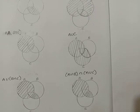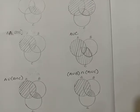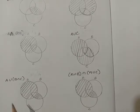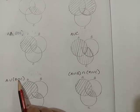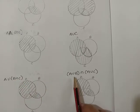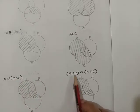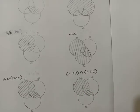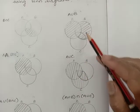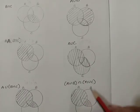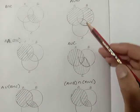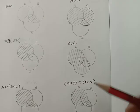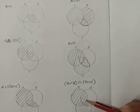Now look at your left hand side and right hand side — both diagrams are equal. Therefore, A union B intersection C is equal to A union B intersection A union C. Compare the diagrams and come to a conclusion by finding what is common in the two diagrams.